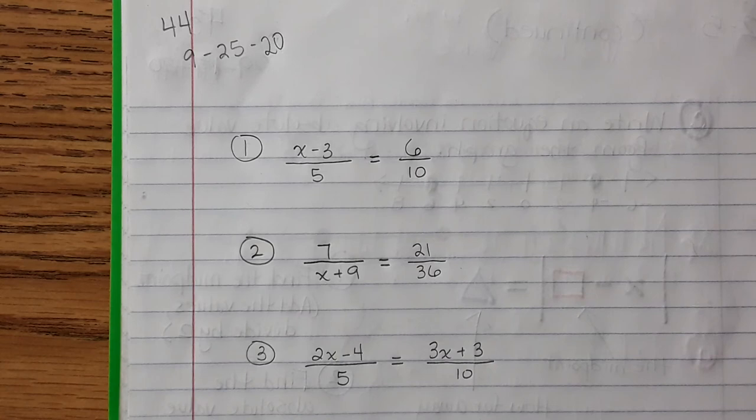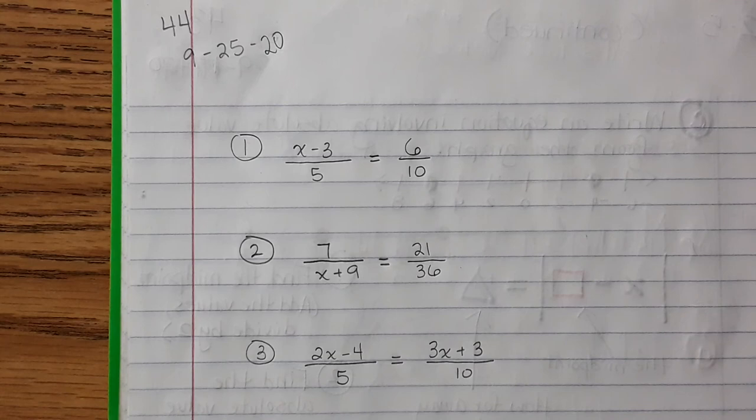So you should have paused the video. If you did not, you still have time. Pause right now. Get all of your answers first, and this is the answer set that you should have. Of course, it should be written x equals 6, x equals 3, and x equals 11.